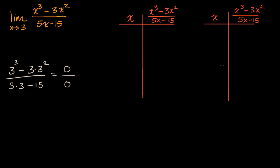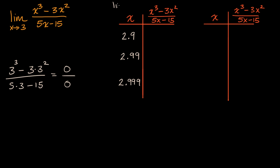The reason I set up two tables is to make it intuitive. On this left table, I'm going to try out x values that get closer and closer to three from the left — from values less than three. So for example, we could go to 2.9, then get even closer with 2.99, and then even closer with 2.999. This approximates the limit from the left.